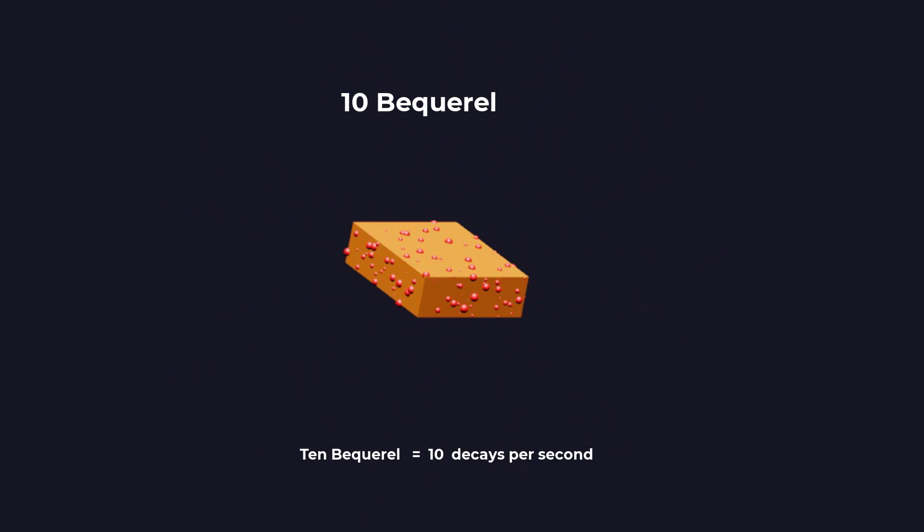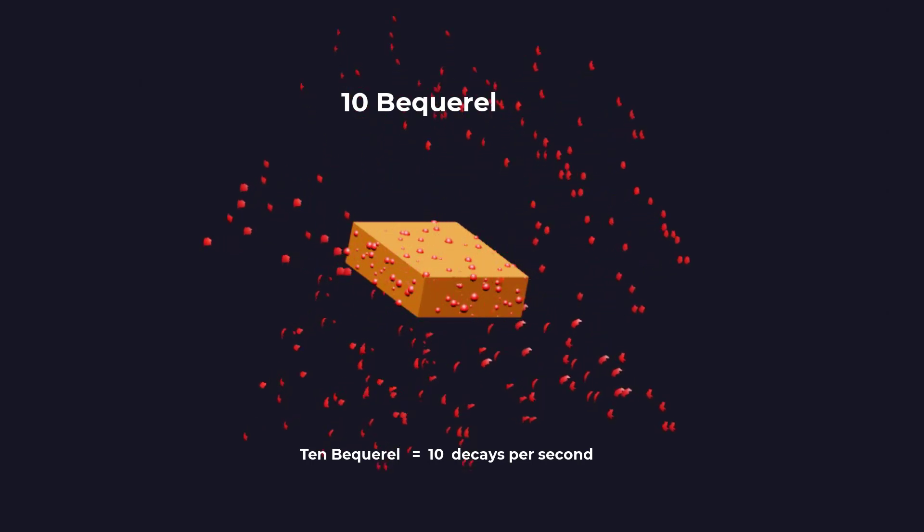For example, if a sample has an activity of 10 becquerels, it means that 10 atoms in that sample decay every second.